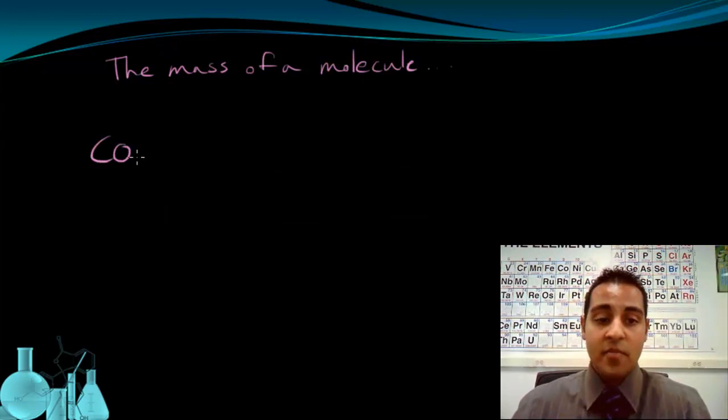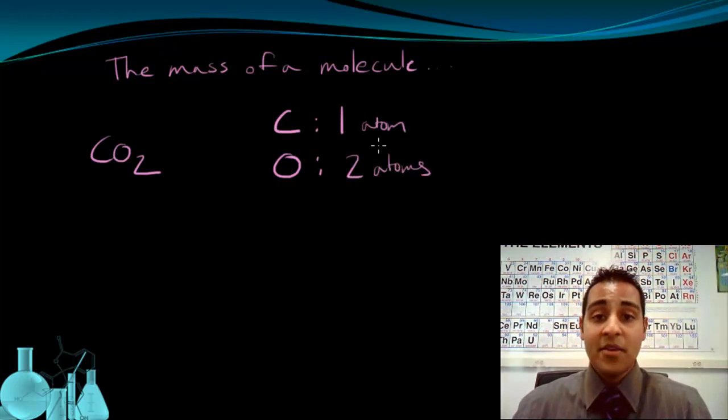We have carbon dioxide, CO2. One molecule of carbon dioxide is made up of atoms of carbon and oxygen. Specifically, we have one atom of carbon and two atoms of oxygen. I'm going to get the value of the mass of an atom of carbon from the periodic table, and I'm going to round to the nearest tenth place when doing this math. So one atom of carbon is 12.0 AMUs.